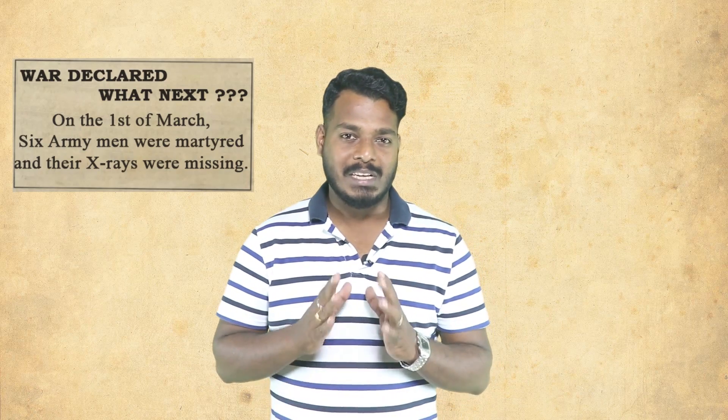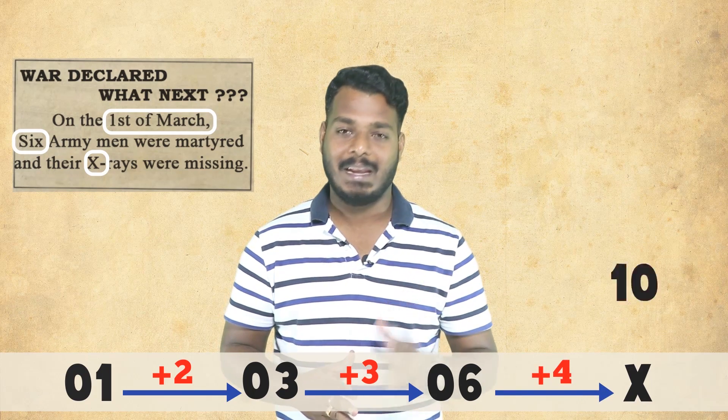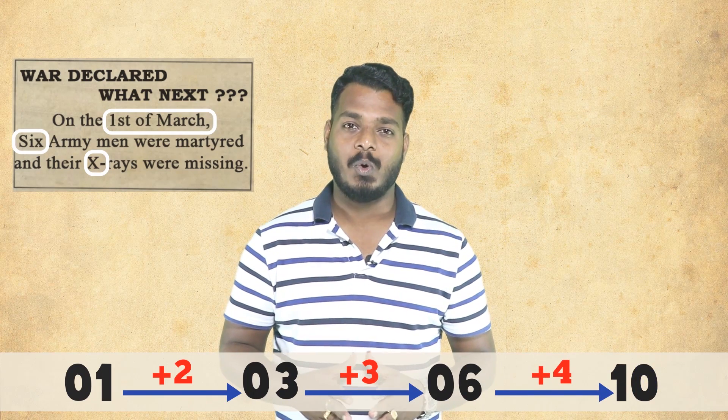Can you decipher the code hidden in this message? Look at the numbers here. The 1st of March: 01, 03. Six men: 06. And you have an x here. If you connect the series, the value of x would come as 10. So that was the code hidden in the message, and it meant that the next attack had to be done on the 10th of that month.